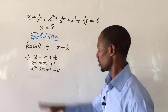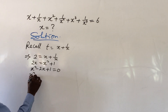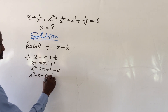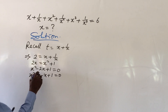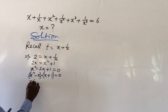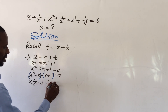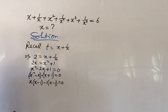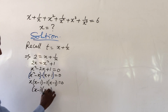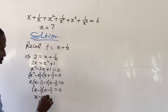We solve x² - 2x + 1 = 0 by factorization. Splitting: x² - x - x + 1 = 0. Grouping: x(x - 1) - 1(x - 1) = 0, giving (x - 1)(x - 1) = 0. So (x - 1)² = 0, meaning x - 1 = 0 twice.